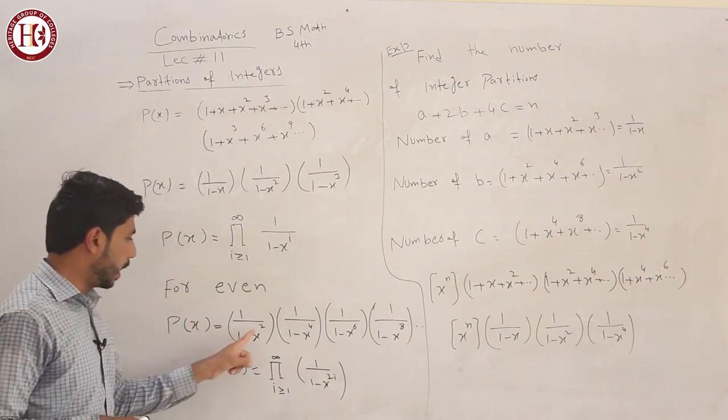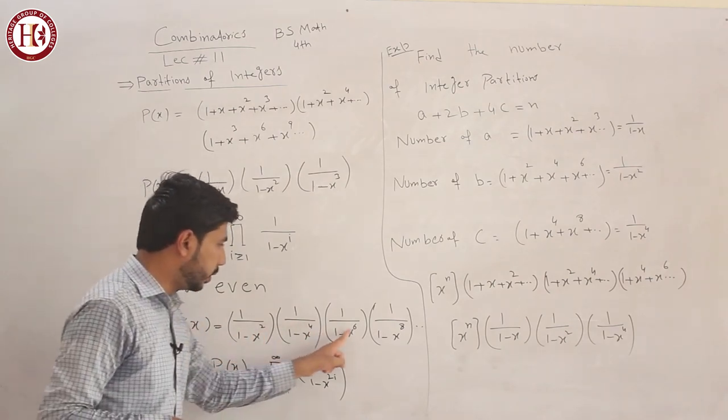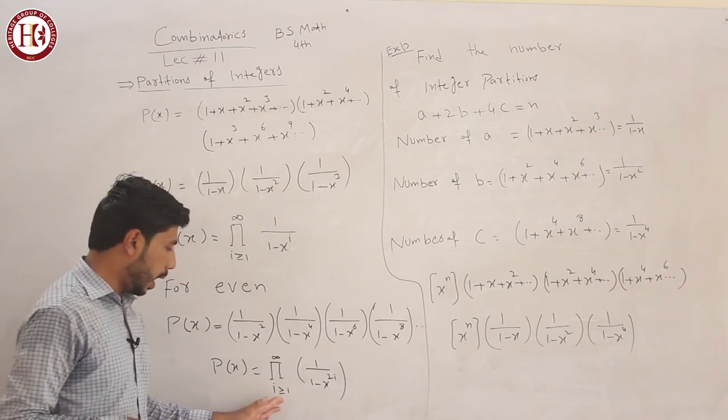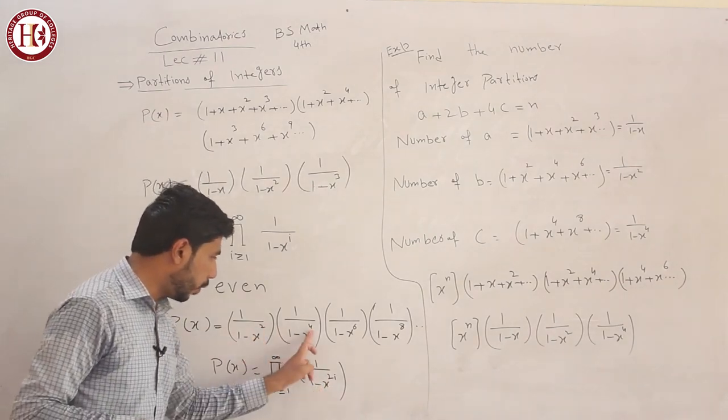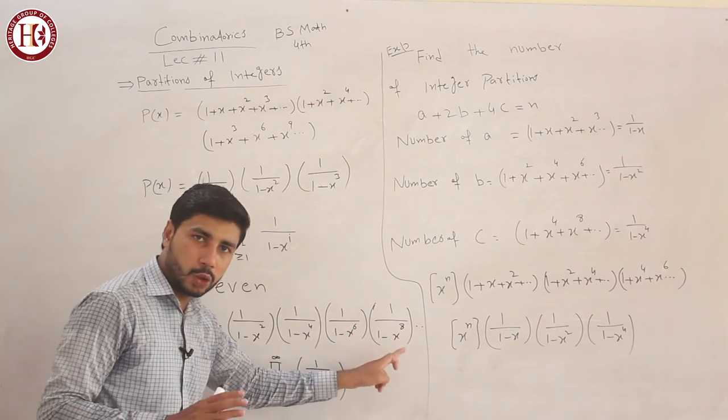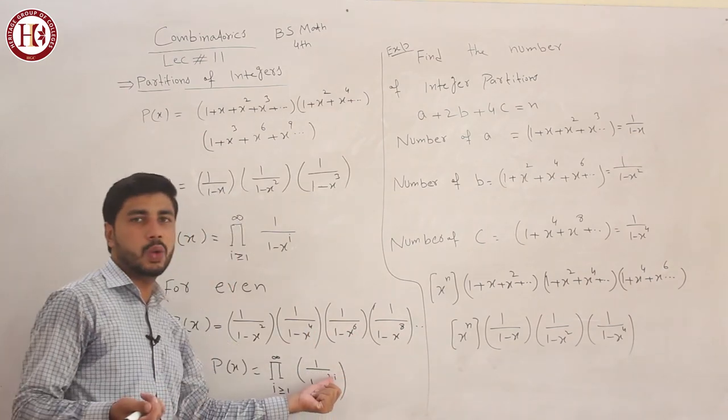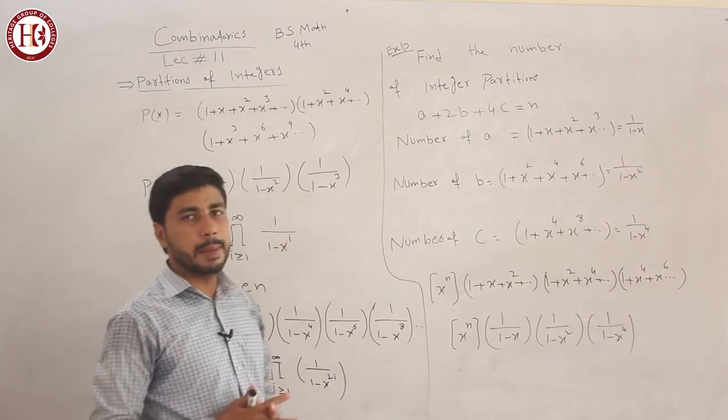What about even numbers? You start from 2: 2, 4, 6, 8. I will write it as summation from i greater than or equal to 1 to infinity, where the exponents are multiples of 2: 2i. So this is for even numbers.